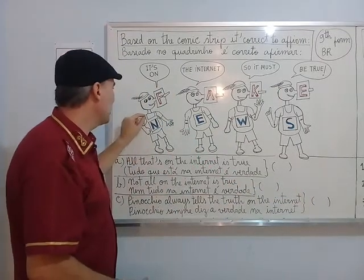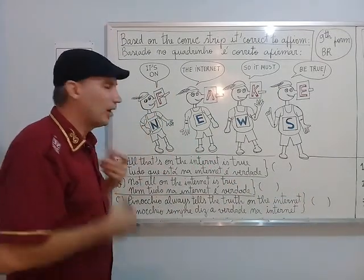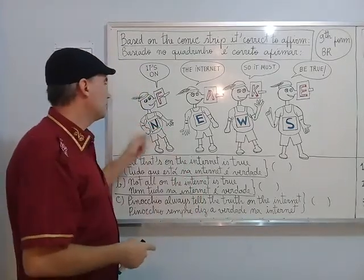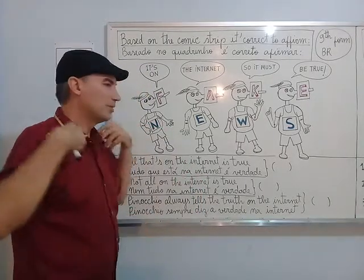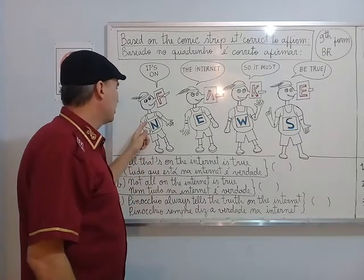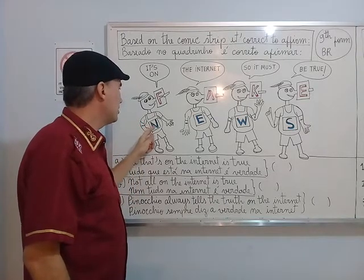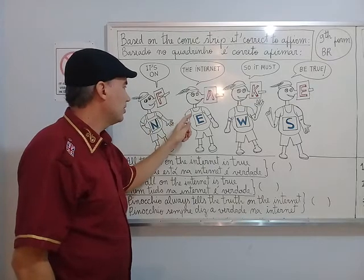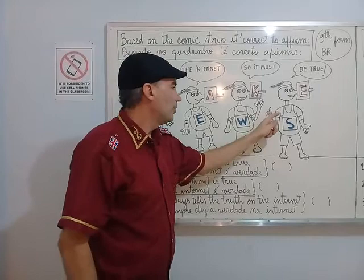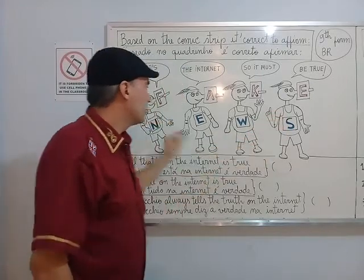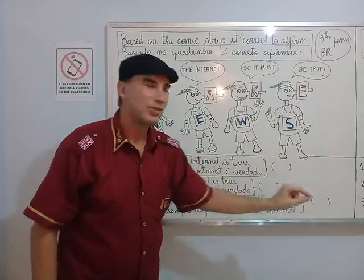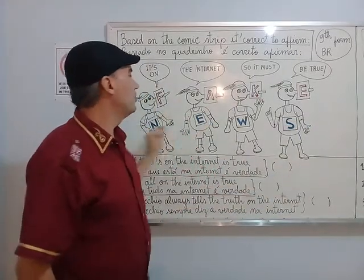Now look at the suspenders. I'm wearing a shirt, but binocular is wearing suspenders. First binocular: letter N. Second binocular: letter E. Third binocular: letter W. Fourth binocular: letter S. So the word is NEWS. Here we have the message: Fake News.